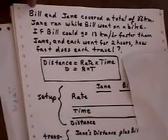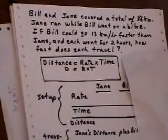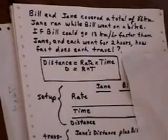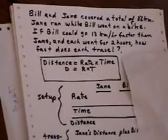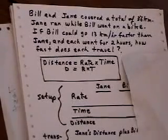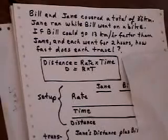Bill and Jane covered a total of 36 kilometers. Jane ran while Bill went on a bike. If Bill could go 13 kilometers an hour faster than Jane, and each went for two hours, how fast does each travel?